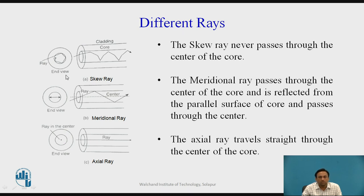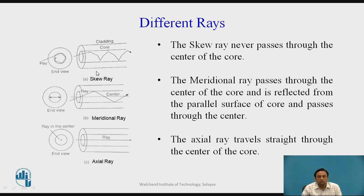Skew rays never pass through the center of the core. The core is surrounded by cladding, and above that a mechanical jacket protects from damage and environmental moisture. Skew rays touch the boundaries of the core-cladding surface and follow a helical path, as shown in the end view figure.